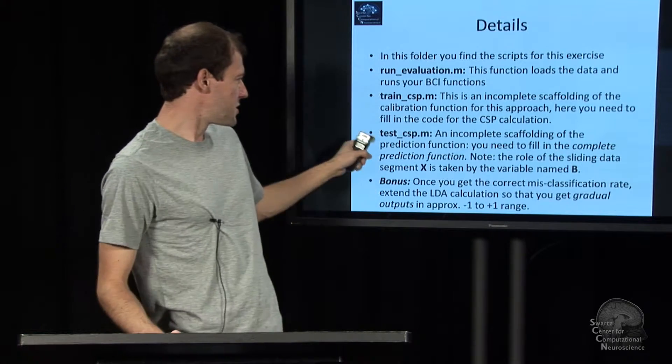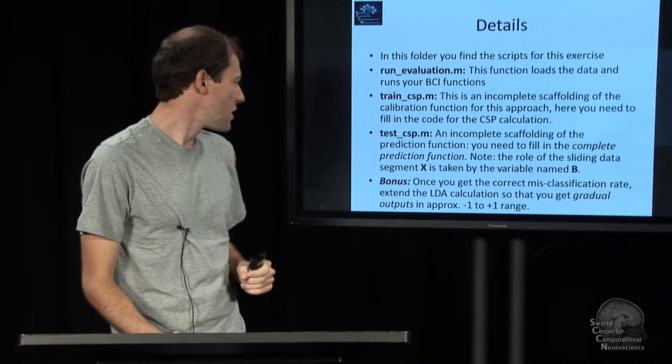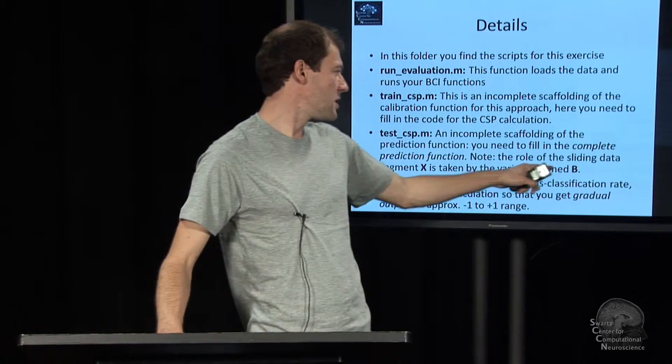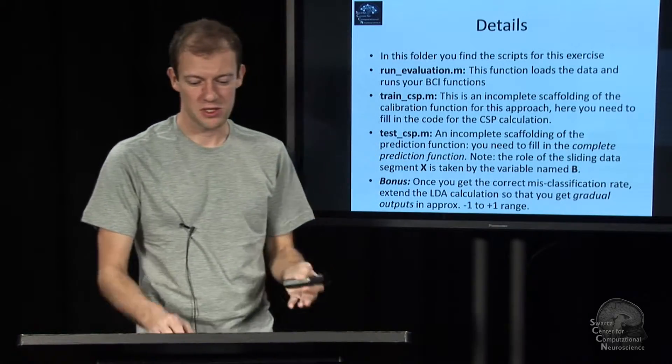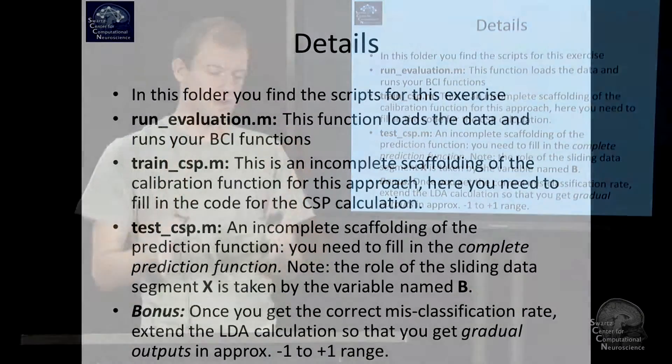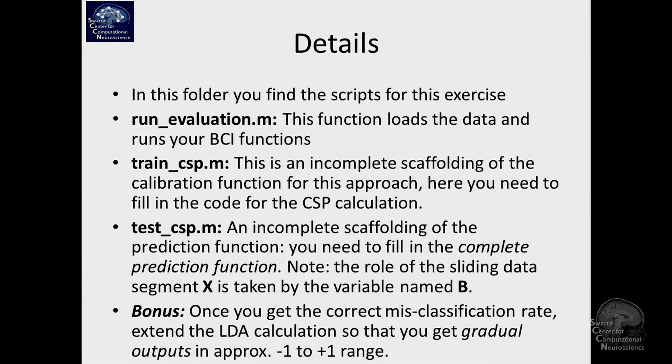So for this test_csp, there is one little thing, and that is there's a variable named B in there. That is basically the role of your single chunk of data. B is a buffer, basically.